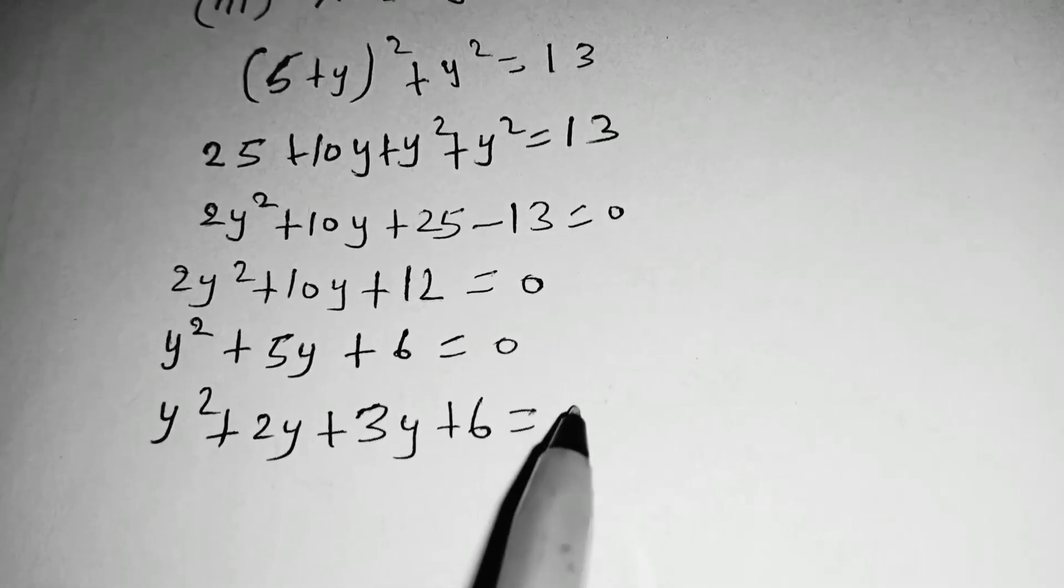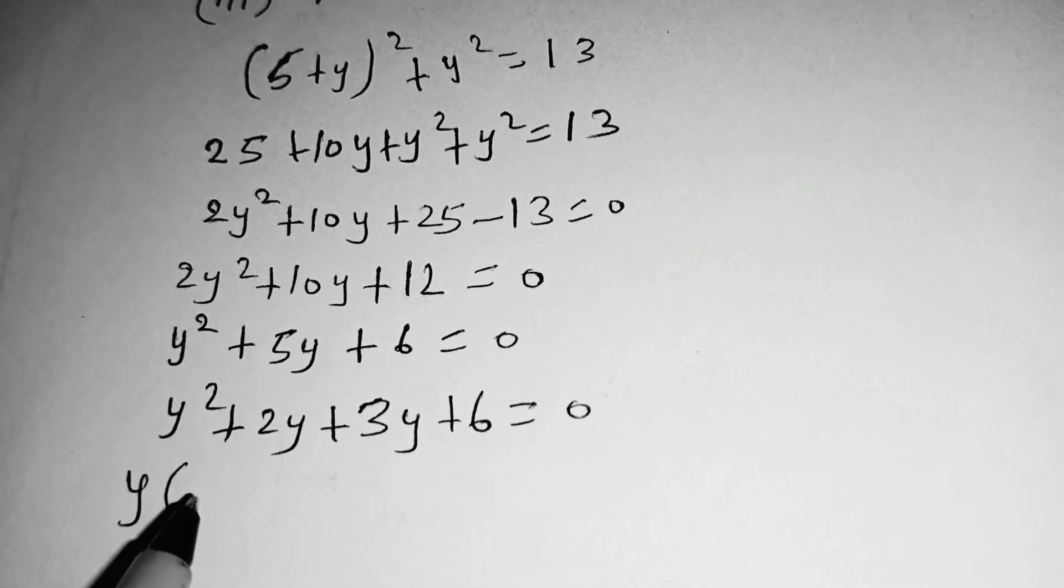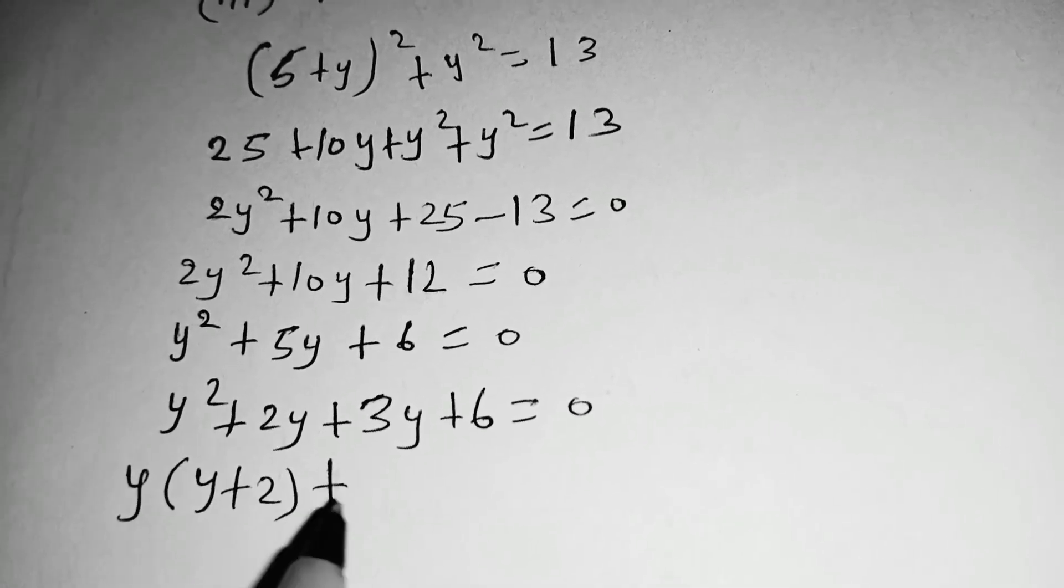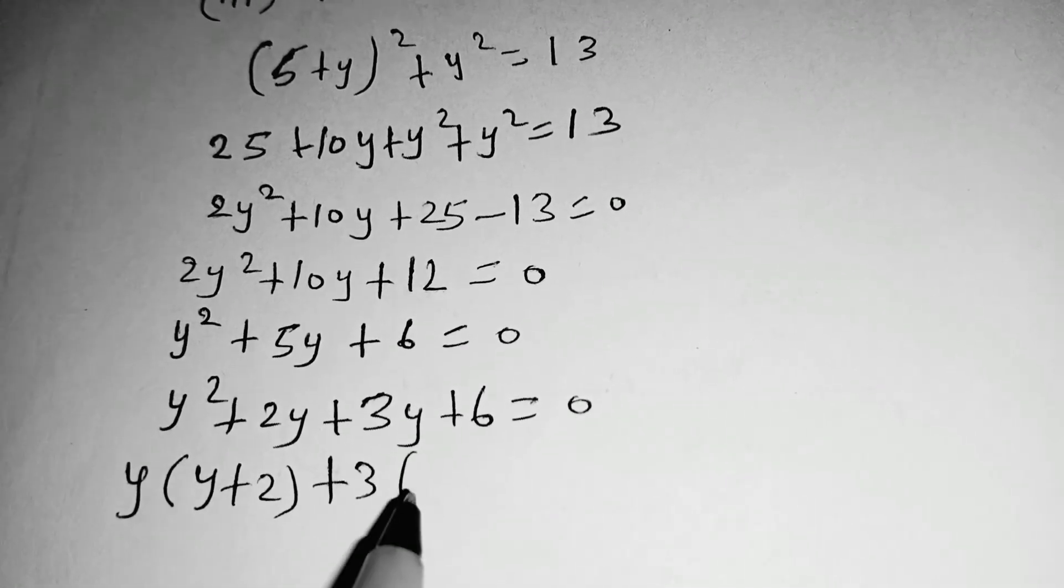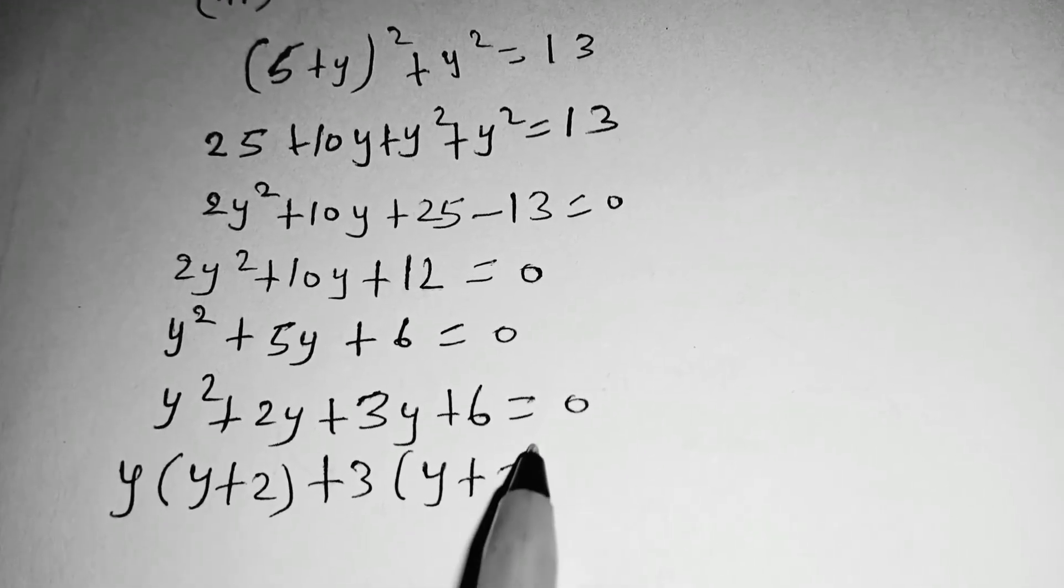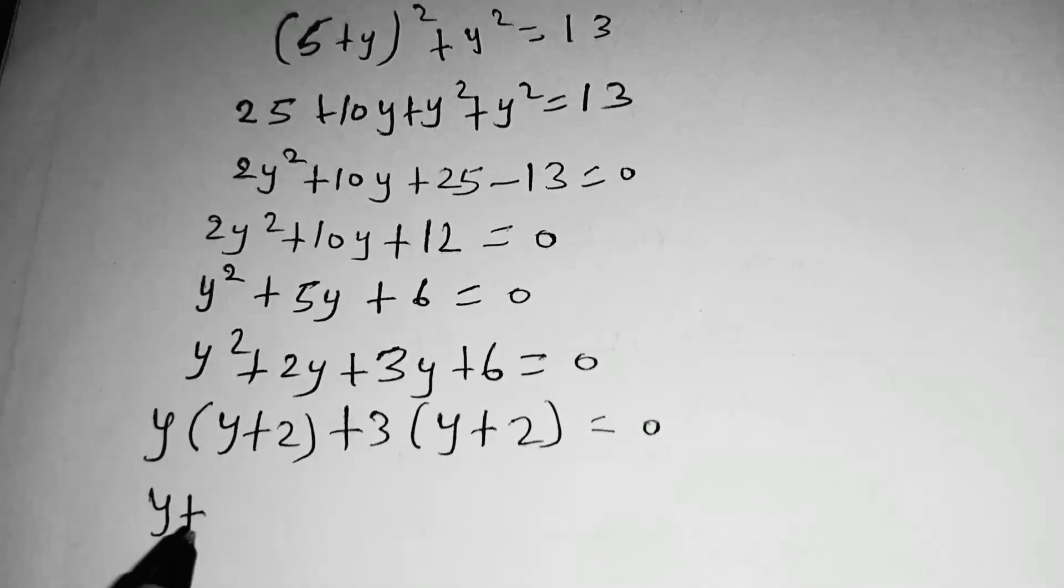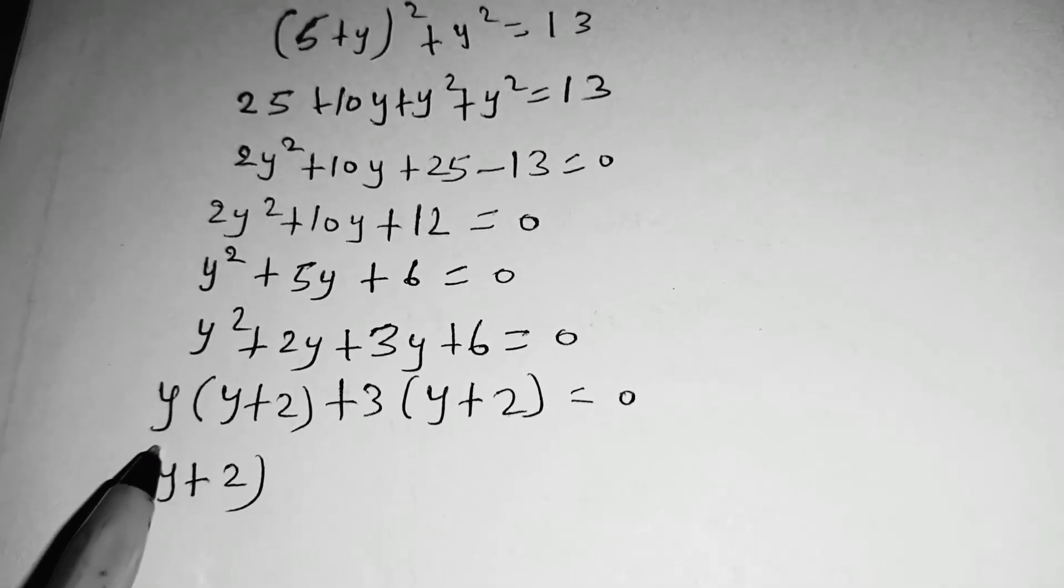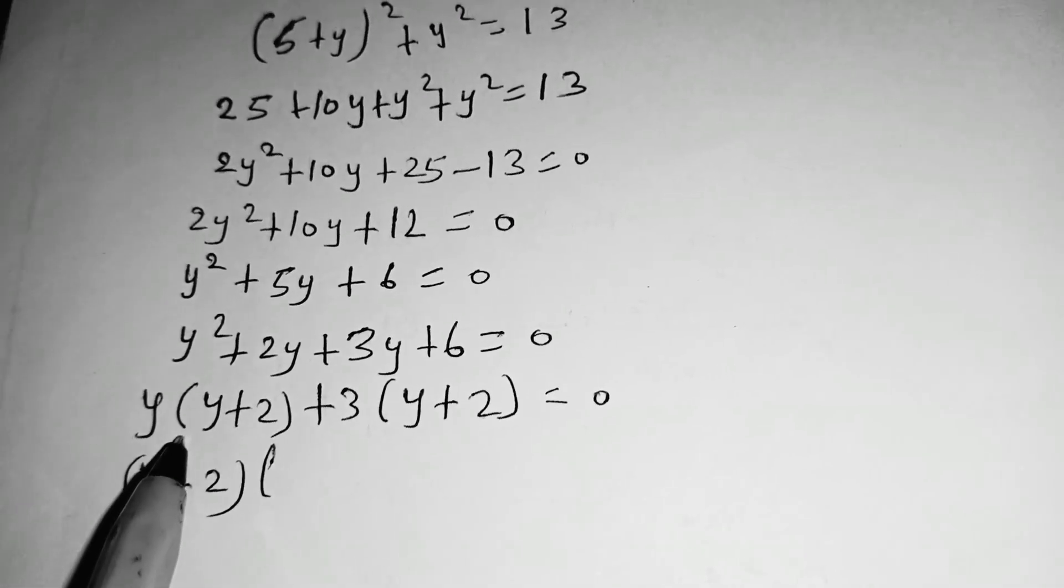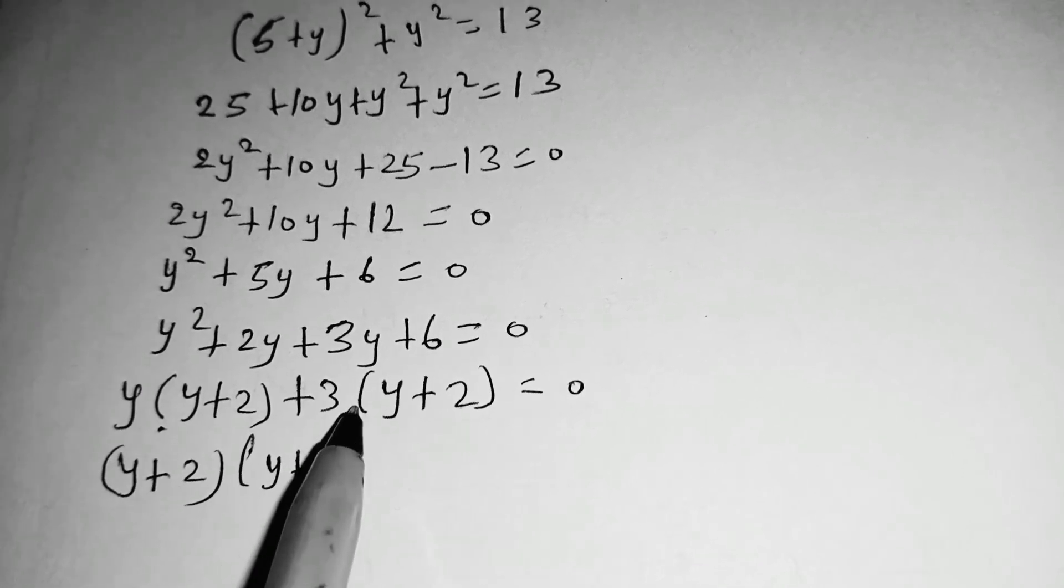So we factorize the first two, whereby we have y times y plus 2, plus, we factorize 3 in the last two numbers, so we shall be left with y plus 2, equals to 0. So y plus 2 is common, so we factorize so that we shall be left with y plus 3, which is equal to 0.